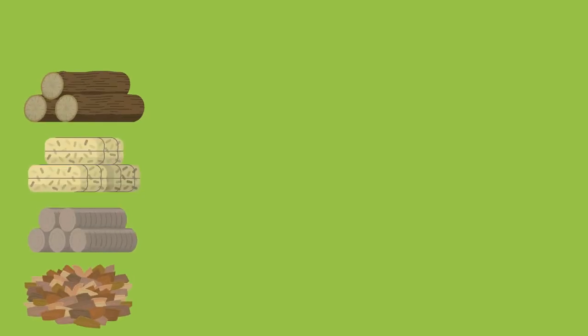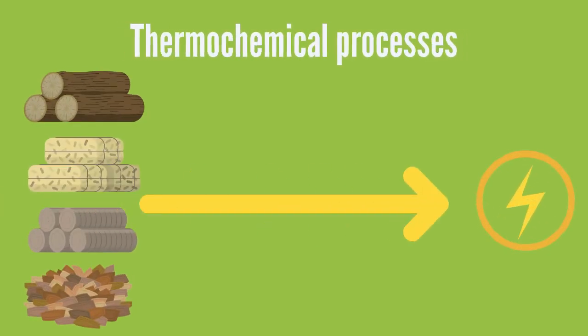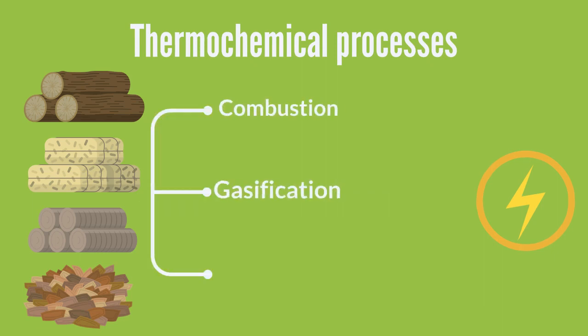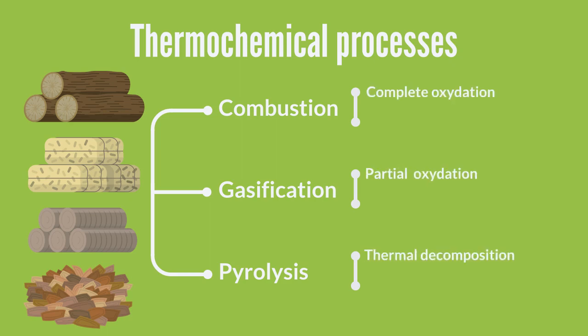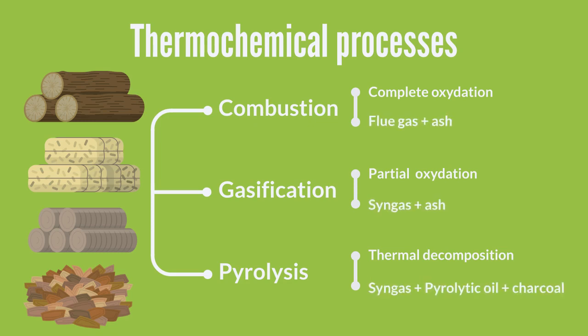Lignocellulosic materials can be converted into energy by thermochemical processes, which are combustion, gasification, and pyrolysis. The differences between them are the amount of oxygen, which determines the degree of oxidation of biomass, and the products obtained in each process.